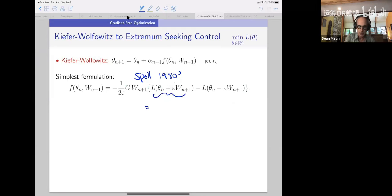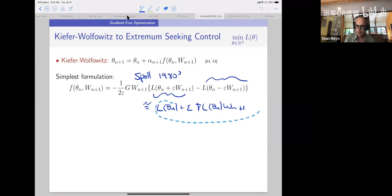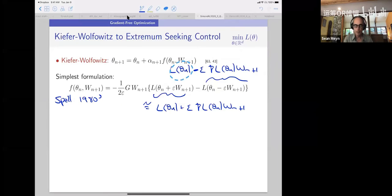This is approximately equal to L of theta n plus epsilon grad L of theta n times W n plus one. And here it's the same thing. Except I have to make one change because it's a minus sign. Right. And so the zeroth order terms cancel out and you're left with something that looks like, and I'm dividing by one over two epsilon. So I get something that looks like a gradient descent. So this is an example of ODE design really.